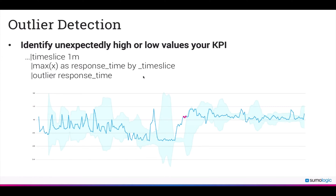In terms of syntax, in addition to a typical query where you're already parsing out server response times within event messages, you just need to identify the time slice, which can be in seconds or minutes. You can also add the outlier operator syntax into an existing query — just these couple of lines. Here you're measuring response times by time slice and then the outlier operator is applied on response time.